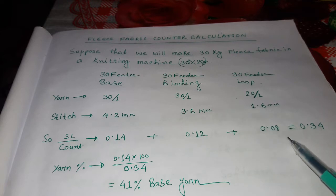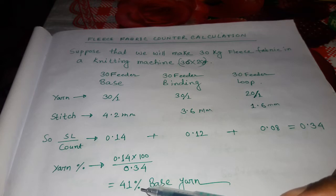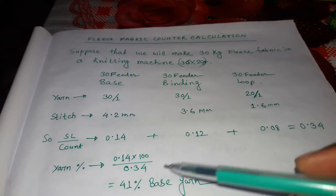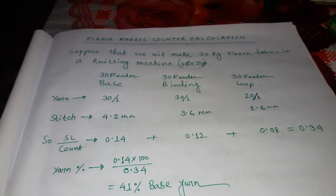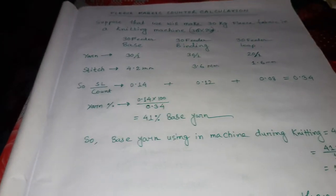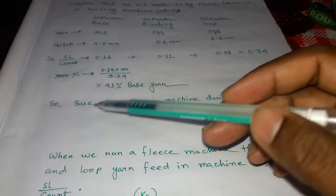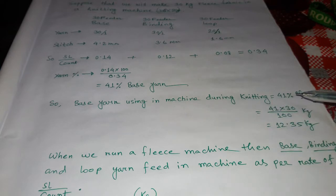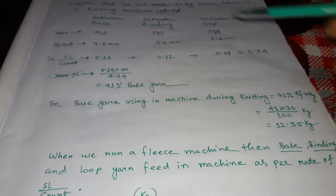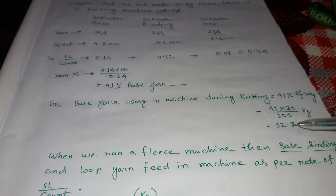If we calculate the percentage — the counter of base yarn quantity — then it will give us the counter for the total quantity. Since 41% base yarn is being used, the base yarn used in the machine during knitting equals 41% of the 30 kg fabric needed, which comes to 12.35 kg.